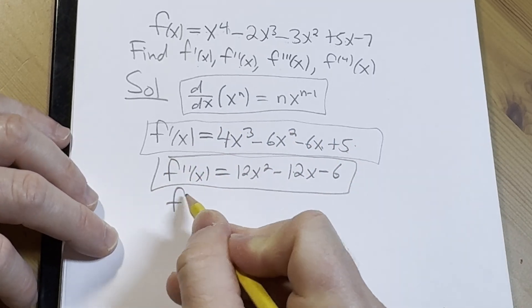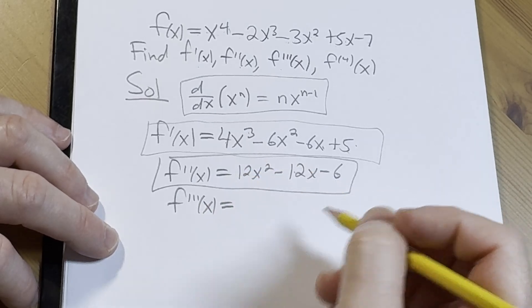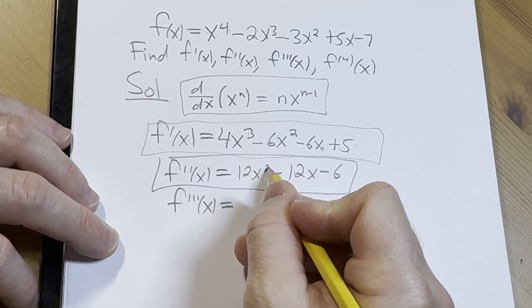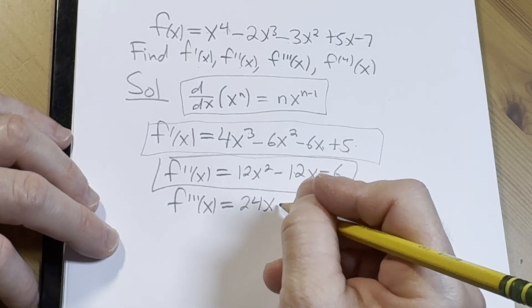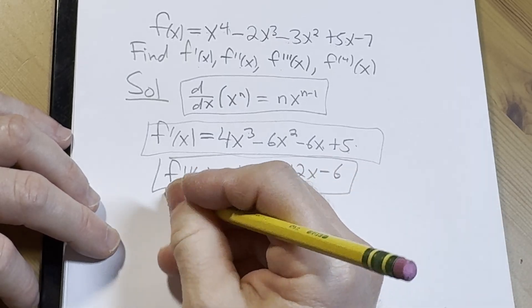Let's do it again. f'''(x), or prime prime prime, no one says that. So 2 times 12 is 24x. And then the derivative of 12x is just 12 and the 12 hangs out. And the negative hangs out. And there we are.